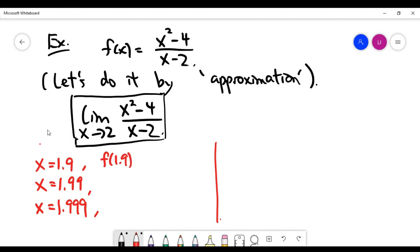For this case, f of 1.9 would be the same as 1.9 squared minus 4 divided by 1.9 minus 2. And this answer is actually 3.9.